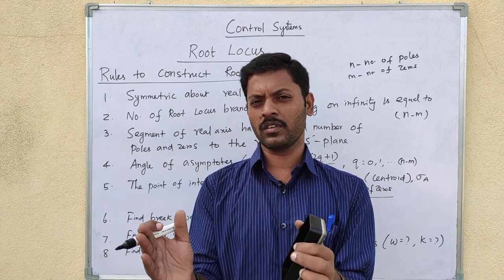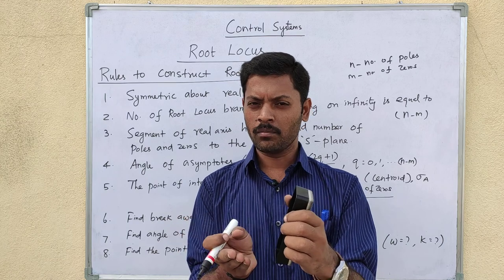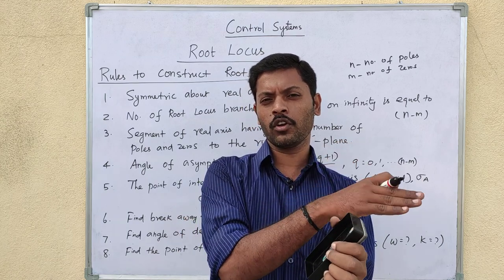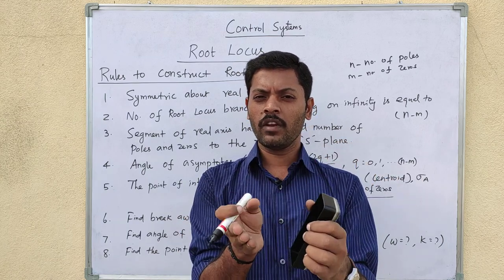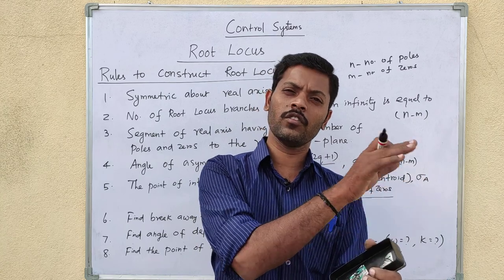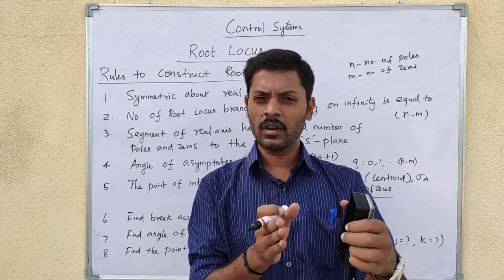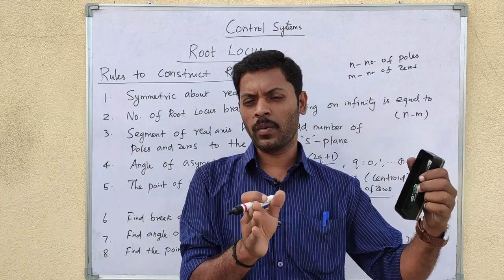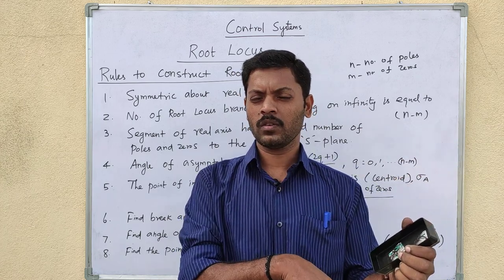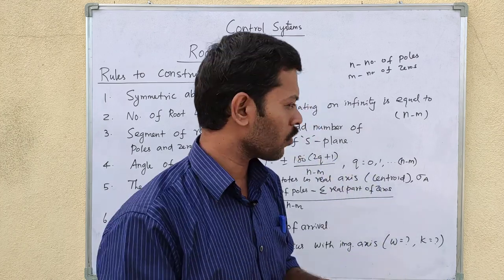The fifth rule is to find the breakaway and break-in points. On the real axis, if there are two consecutive poles, the root locus branches between them. As K increases, the branches break away from the poles. We will give a detailed example of this.